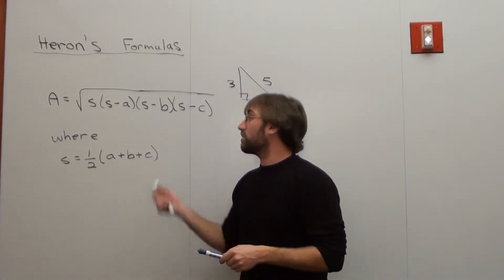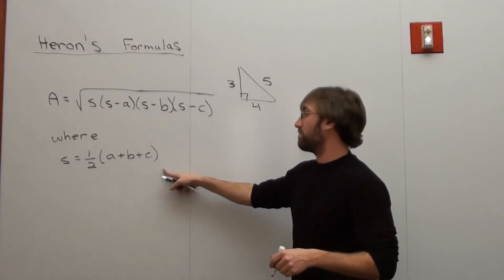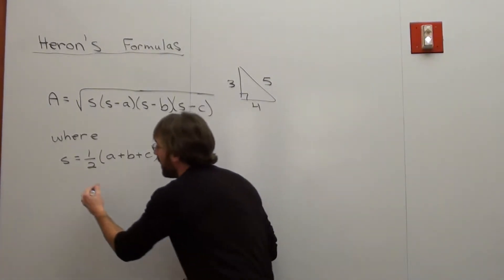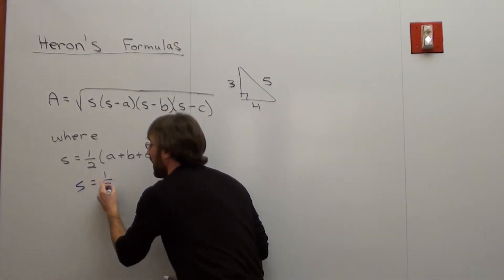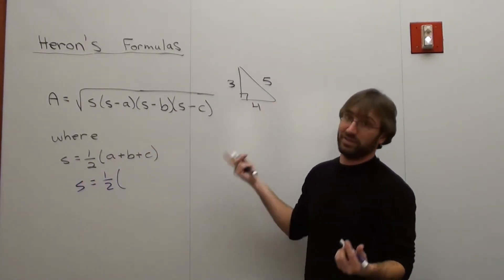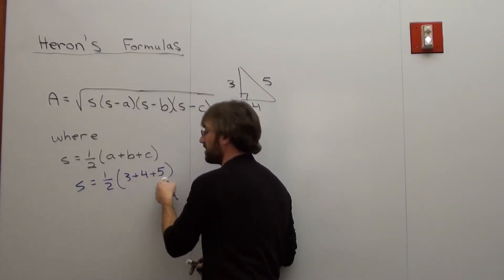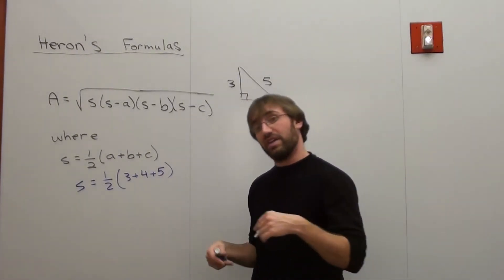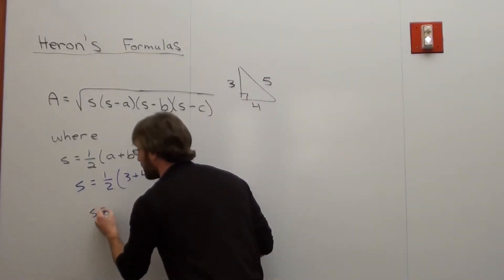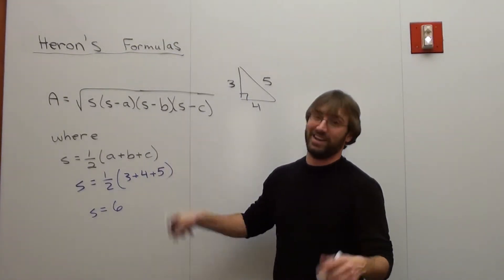So the area equals all this great stuff. Well, my S, let's go figure out what that is. S equals one-half times A plus B plus C. That's 3 plus 4 plus 5. 3 plus 5 is 8 plus 4 is 12, and half of 12 is 6. So my S equals 6. Let's just make sure that's right. Yeah, S is 6.